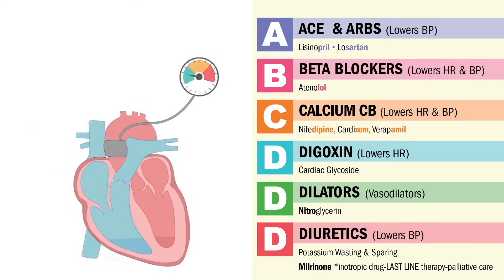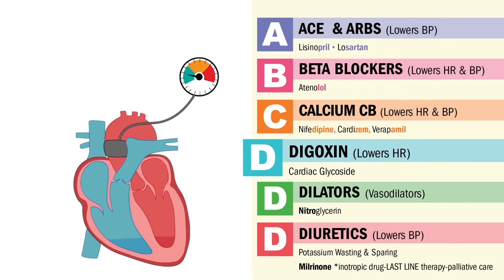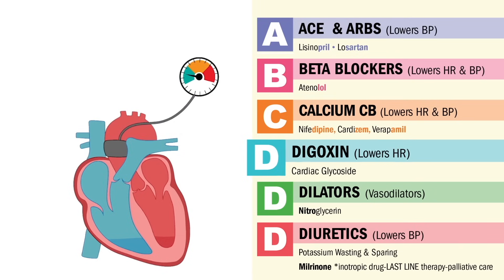Now all these drugs drop the blood pressure and take workload off the heart. Except digoxin — aka digoxin — who digs for a deeper contraction. It does not affect the blood pressure at all; it only decreases the heart rate. And it comes with toxic side effects, so we call digoxin the toxin.